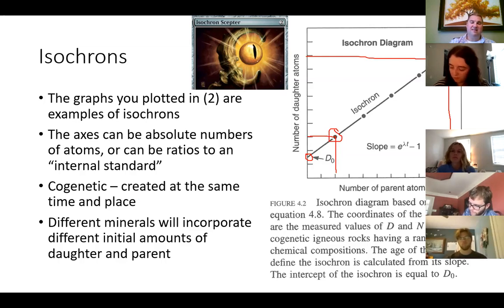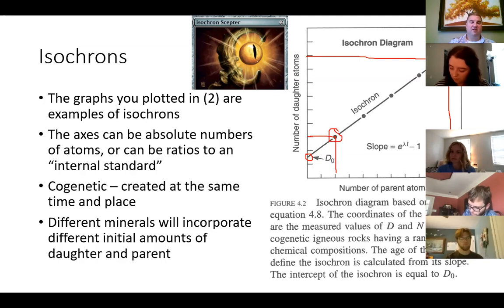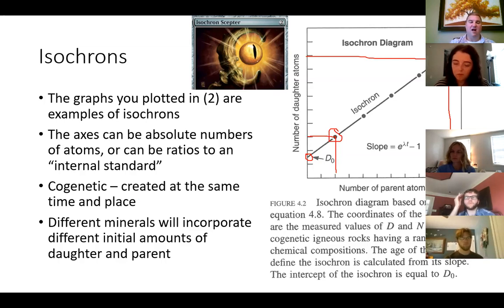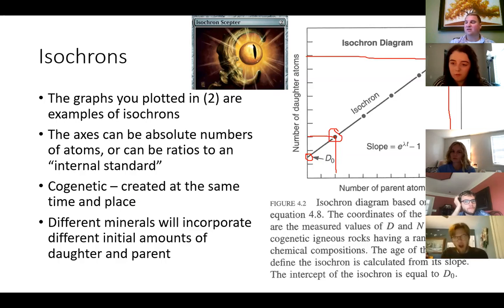Different minerals incorporate different amounts of parent or daughter, which shifts the line a little bit — that's how you get different points on the plot. So you took some granite, some quartz, looked for something embedded in both, got two different points on the plot, and you can create an isochron.